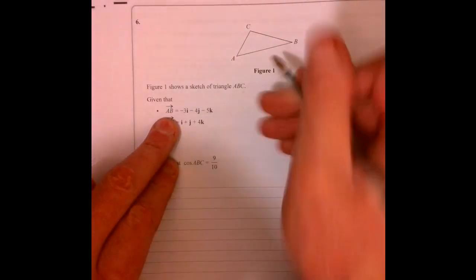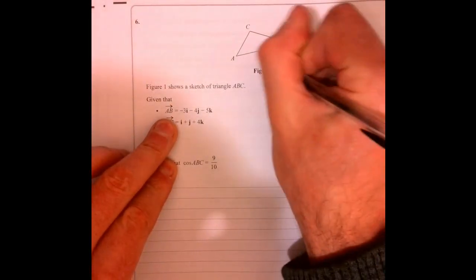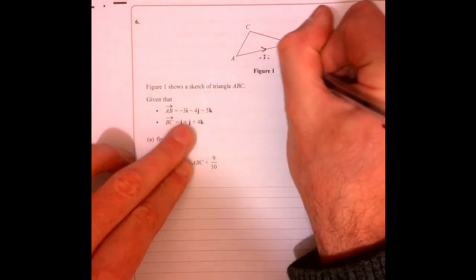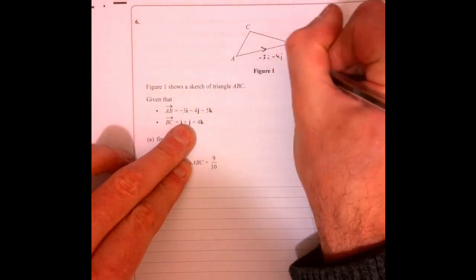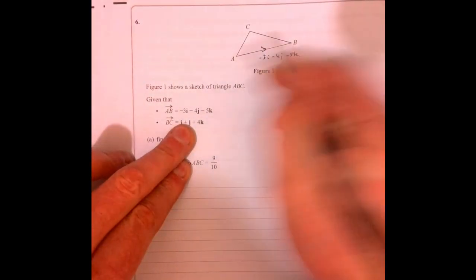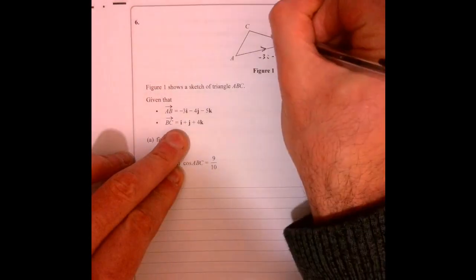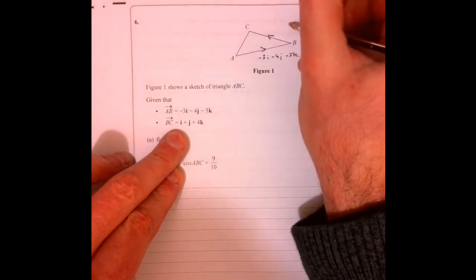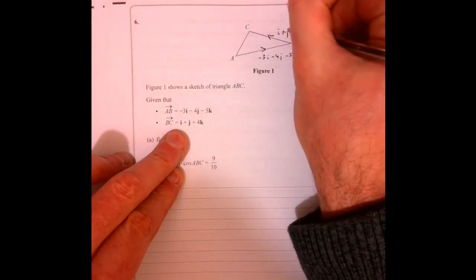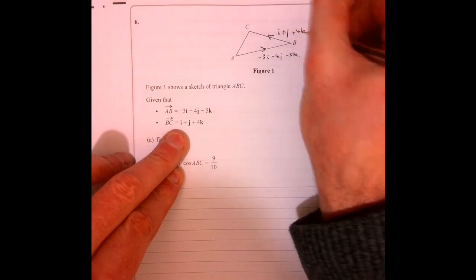Question 6. So what are we told? We're told vector AB is minus 3I minus 4J minus 5K. I'll just find it easier if I write them on there. BC, so B to C is I plus J plus 4K.